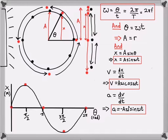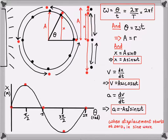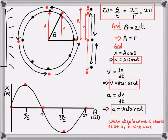These formulas are only relevant when the displacement starts at zero — at the equilibrium position. In other words, the wave we get from that type of motion is a sine wave. These formulas are relevant when displacement starts at zero, or when we have a sine wave.